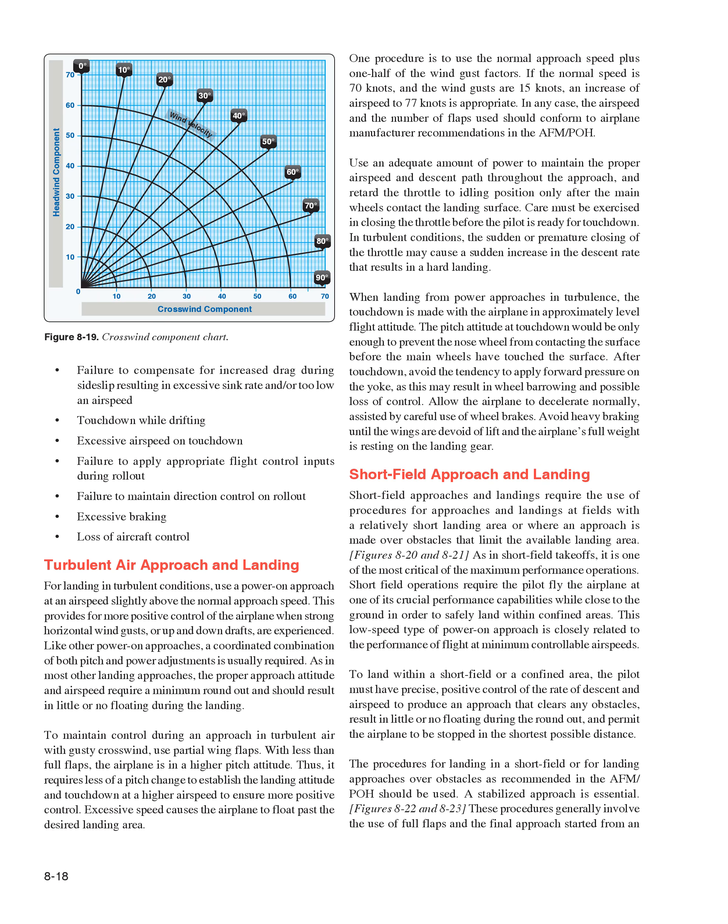Use an adequate amount of power to maintain the proper airspeed and descent path throughout the approach, and retard the throttle to idling only after the main wheels contact the landing surface. In turbulent conditions, the sudden or premature closing of the throttle may cause a sudden increase in the descent rate resulting in a hard landing. When landing from power approaches in turbulence, the touchdown is made with the airplane in an approximately level flight attitude—only enough pitch to prevent the nose wheel from contacting the surface before the main wheels. After touchdown, avoid the tendency to apply forward pressure on the yoke as this may result in wheelbarrowing and possible loss of control. Allow the airplane to decelerate normally, assisted by careful use of wheel brakes. Avoid heavy braking until the wings are devoid of lift and the airplane's full weight is resting on the landing gear.